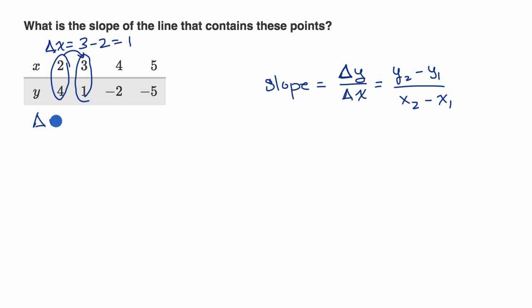And what's our change in y? Our change in y is our finishing y, one, minus our starting y, four, which is equal to negative three. And you didn't even have to do this math, you would have been able to see to go from two to three, you added one, and to go from four to one, you have to subtract three. But there we have all the information we need.